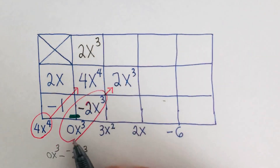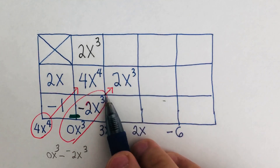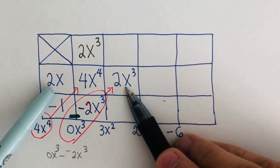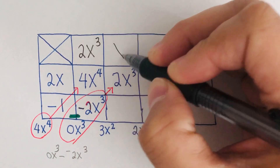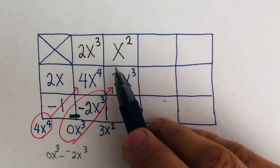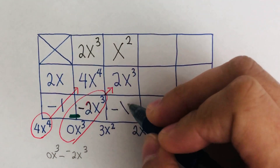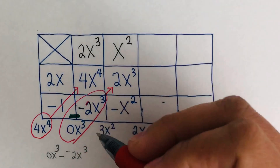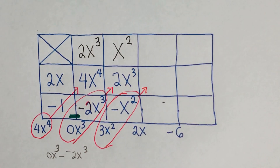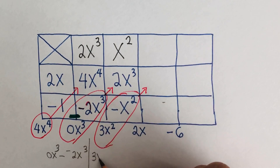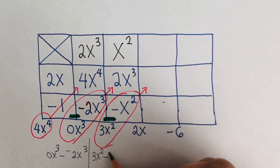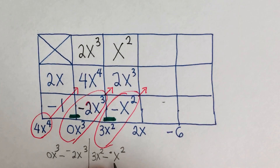Whatever the difference is goes into the next box. I need to find what to write so that multiplying by 2x gives 2x cubed — that's x squared. Then x squared times 2x is 2x cubed, and x squared times negative 1 is negative x squared. Subtracting: 3x squared minus negative x squared gives 4x squared, which goes in the next box.